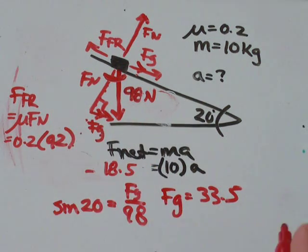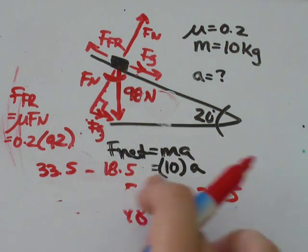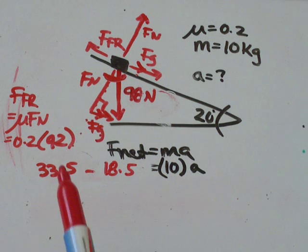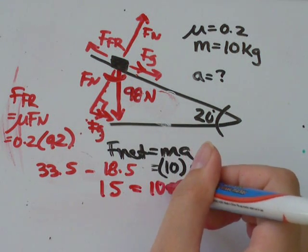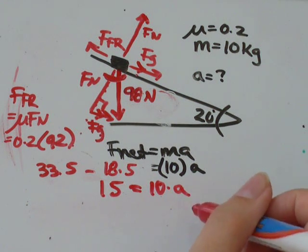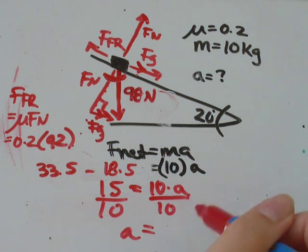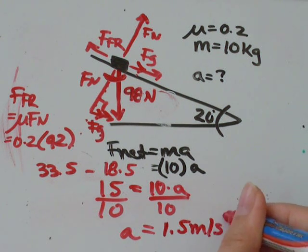I'm going to plug that in here for Fg, 33.5. So now all we have to do is some pretty simple math. 33.5 minus 18.5 is about equal to 15. So 15 equals 10 times the acceleration. To get acceleration, I just need to divide by 10 on both sides. And I get that acceleration is equal to about 1.5 meters per second squared.